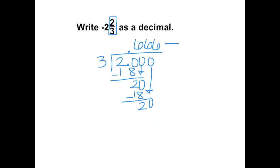So we can write this as 0.6 repeating with bar notation, and we have to bring over our whole number. So the final answer is negative two point six repeating.